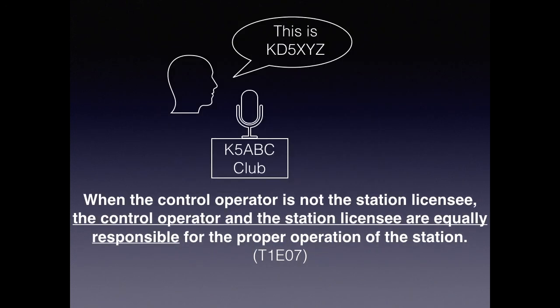Sometimes you may be the control operator but not the station licensee. For example, if you're a member of a club and the club owns a transceiver in a clubhouse with a station license — say the club is K5ABC and your license is KD5XYZ — you may use the club's call sign to make contacts, but you are acting as yourself. When a control operator is not the station licensee, the control operator and the station licensee are equally responsible for the proper operation of the station.